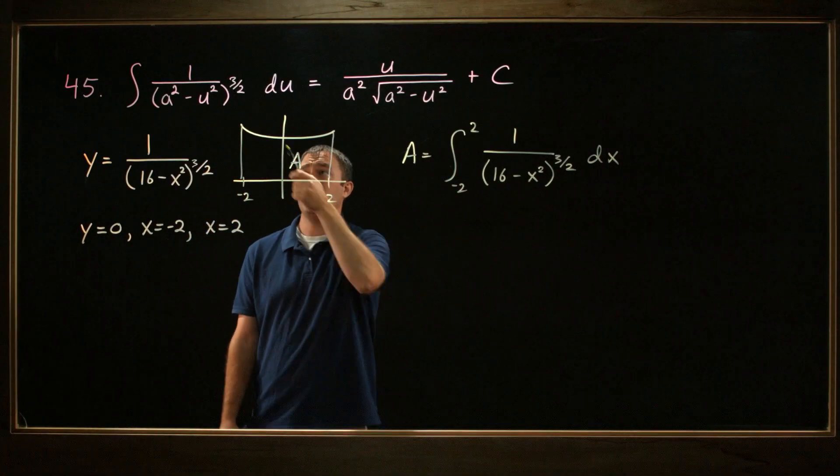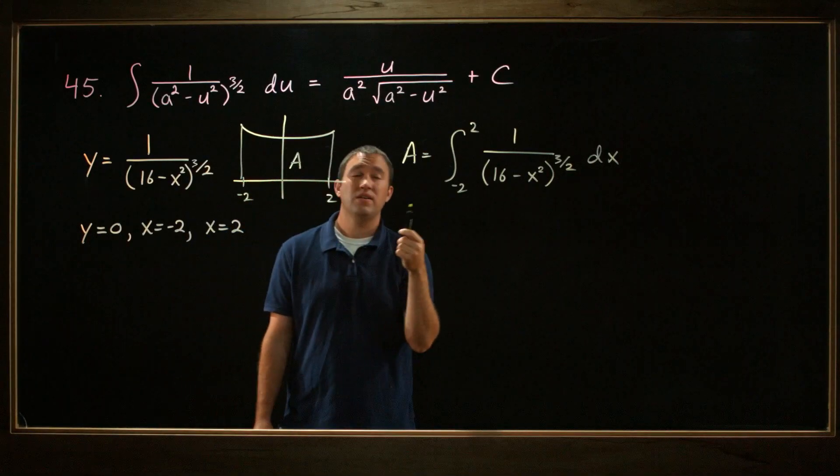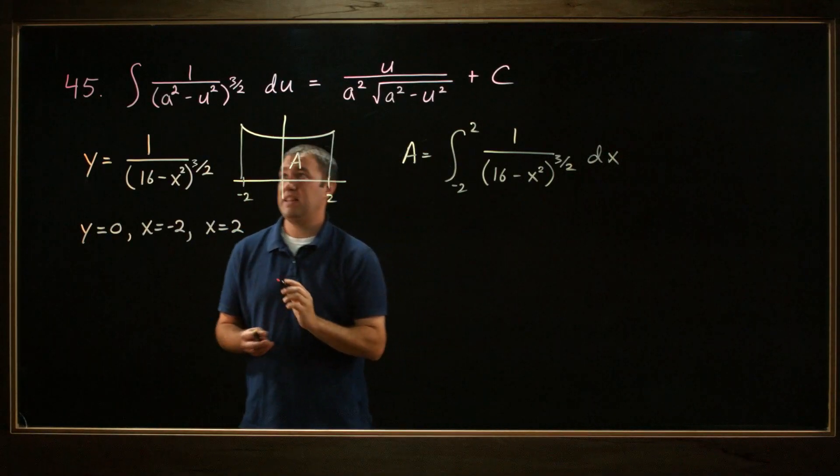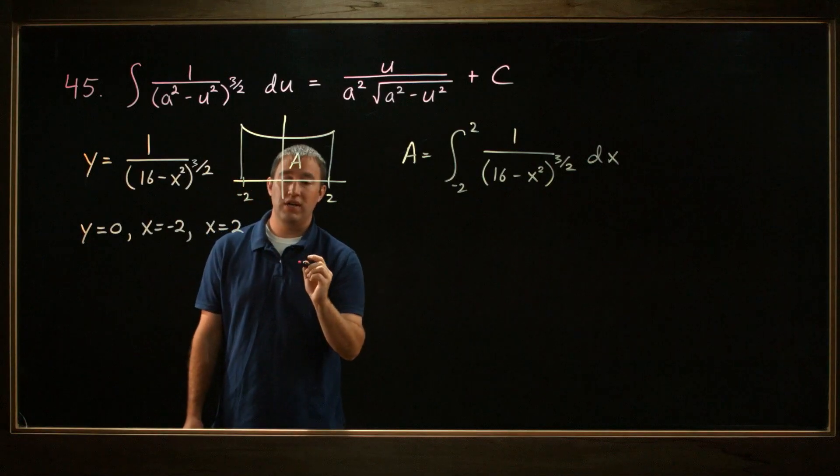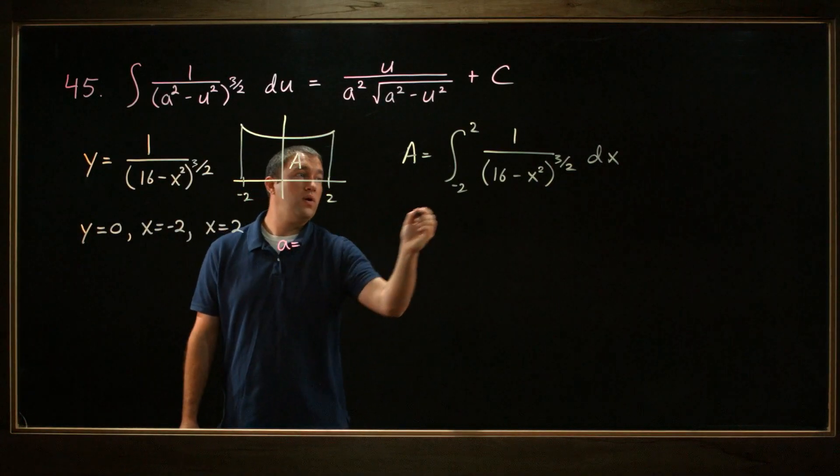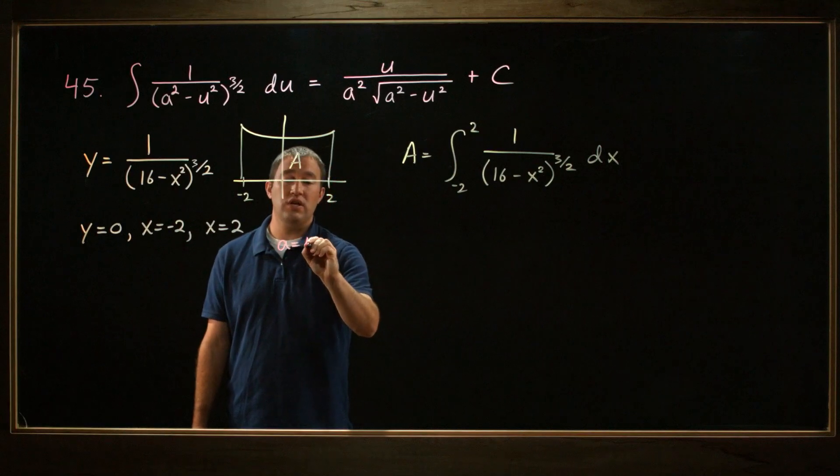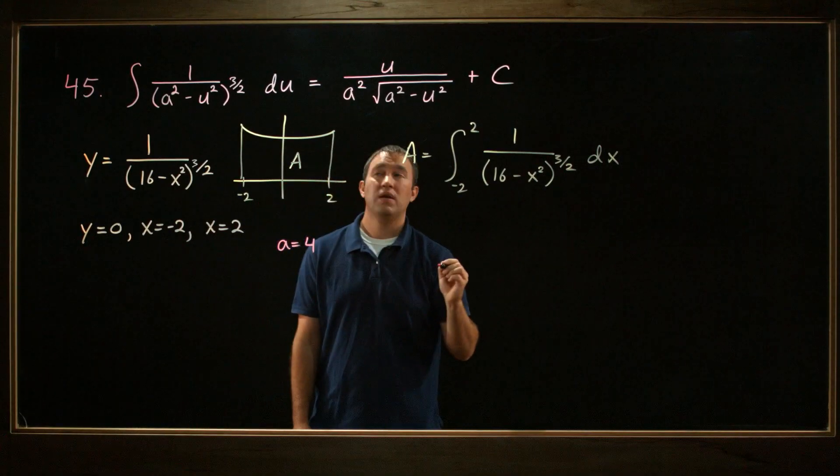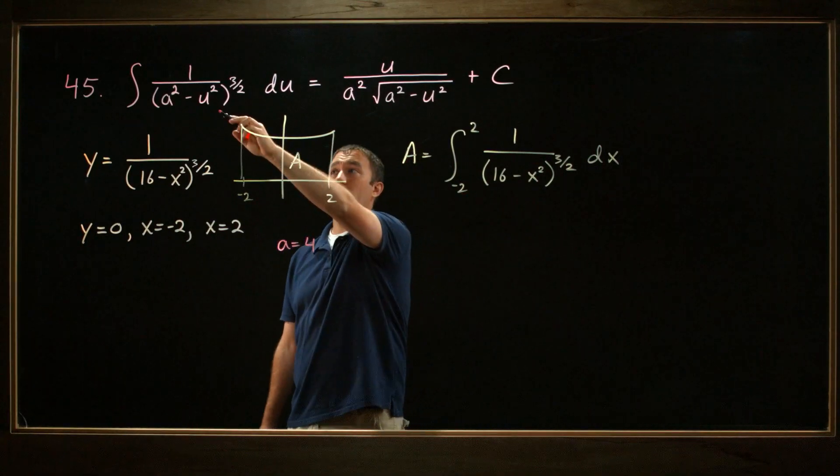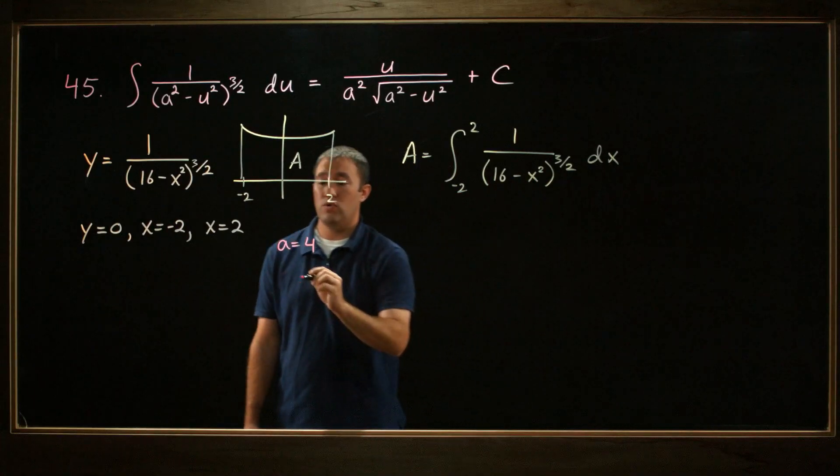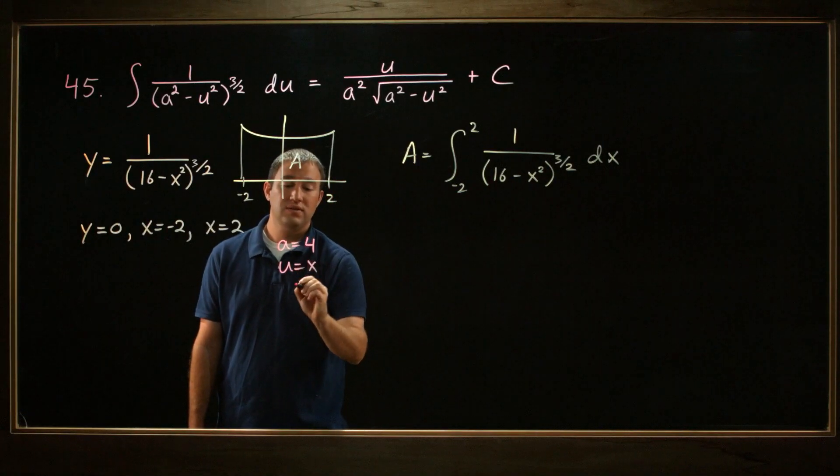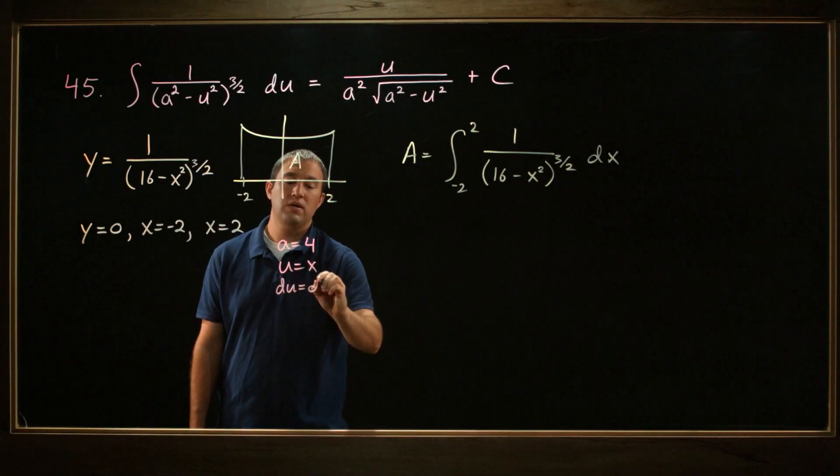Let's just identify, if we're going to use this formula, what a is and what u is. In this case, a is going to equal, well, a squared is going to equal 16, so a is going to equal 4. u, well, u squared is going to equal x squared, so u is going to equal x. And du is going to be dx.